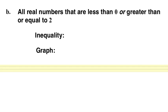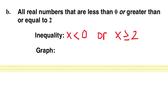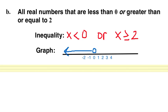Next, we want to translate: all real numbers that are less than 0 or greater than or equal to 2. The word 'or' gives us a different inequality than 'and'. With 'or', we can't combine the inequality the way we did with part A — we write them separately with the word 'or' in between. To graph this, we make an open circle at 0 and go to the left, because it's everything less than 0. Then, since x is greater than or equal to 2, we do a closed circle at 2 and go to the right.